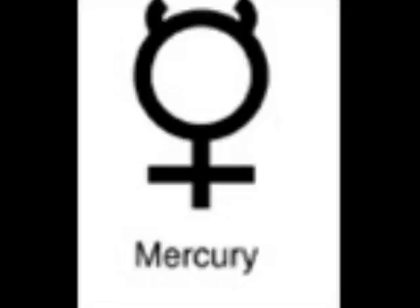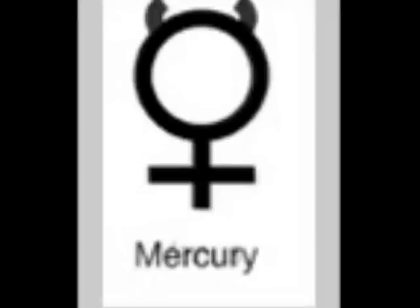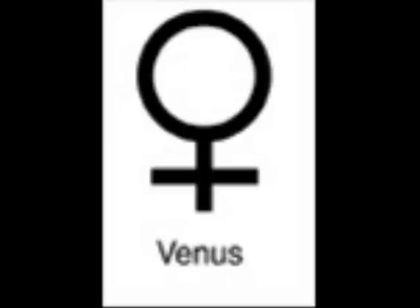This is the planet Mercury. Before we talk about Mercury, it's best to first look at Venus because Mercury is a variation of Venus. Some say that this symbol for Venus represents a mirror — the circle is the mirror and the plus symbol at the bottom is the handle. So we could say that this is the mirror of Venus. This is also the symbol that a biologist uses for female.